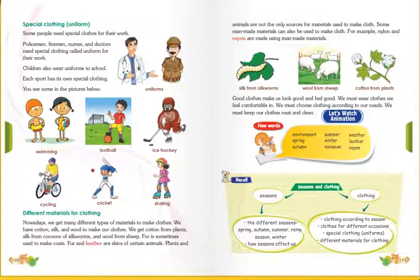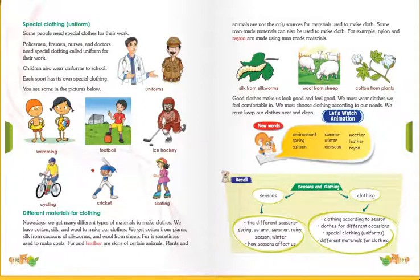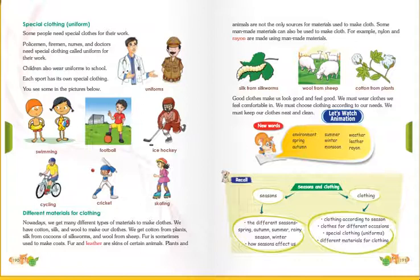Children, let's continue our lesson. Take out page number 119, EVS Reader - Different Materials for Clothing. Yes, we get many different types of materials to make clothes. We have cotton, silk, and wool to make our clothes.